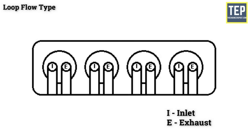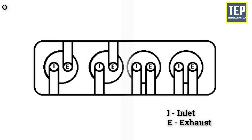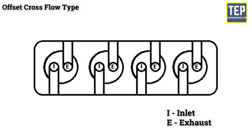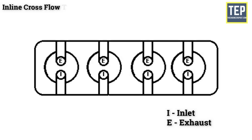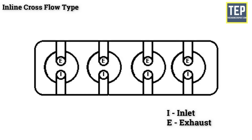In the loop flow type, the inlet and exhaust manifolds are on the same side, which facilitates preheating of the intake air. In the offset cross flow type, the inlet and exhaust manifolds are placed on different sides of the cylinder head. In the inline cross flow type, the valves are positioned transversely and usually inclined to each other, while the inlet and exhaust manifolds are on different sides. This arrangement gives better performance but is costlier.